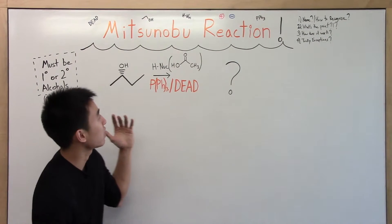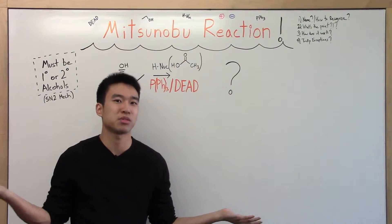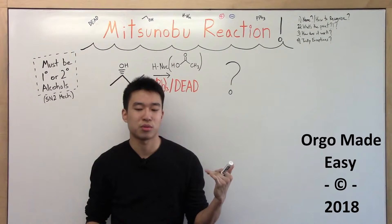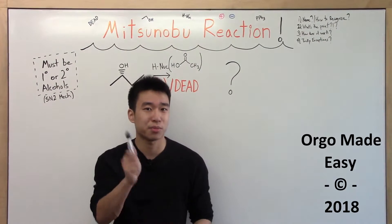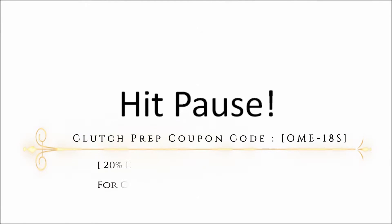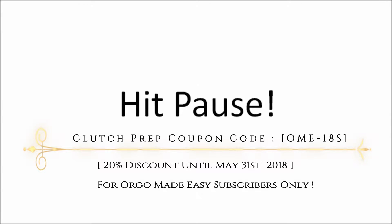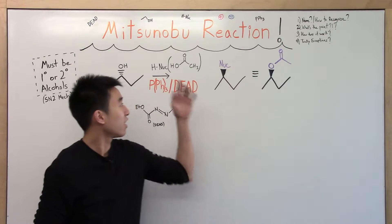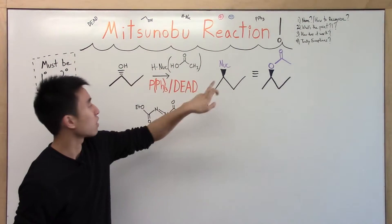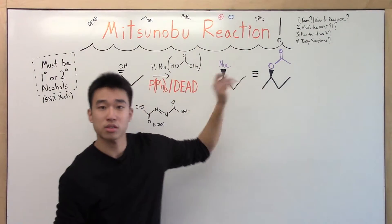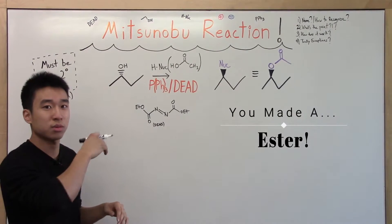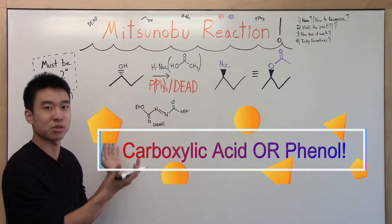So that's how to recognize it. Now, what's the point of the Mitsunobu reaction? Let's see if you remember what your professor taught in lecture. If you haven't learned this reaction, maybe you can just take a guess — hit pause, we'll come back in a few seconds. Okay, that's the point of the reaction: it replaces the alcohol on your secondary alcohol with your nucleophile. Notice that your nucleophile loses the H — so the carboxylic acid loses the H. And notice the change in dashing and wedging — it's very important. That's the whole point of the Mitsunobu reaction.